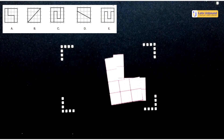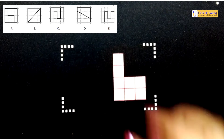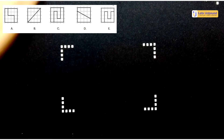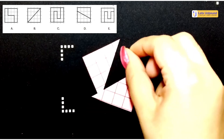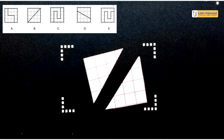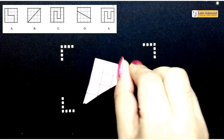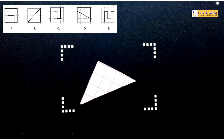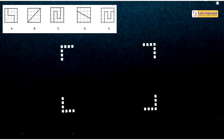Now let's check option B. Option B is made up of two identical right angles. We'll apply the same test: if they overlap when rotated, they are identical; if they don't overlap, they are different shapes. Let me rotate it and place it over the first shape. As you can see, they both overlap — which means they are identical shapes.